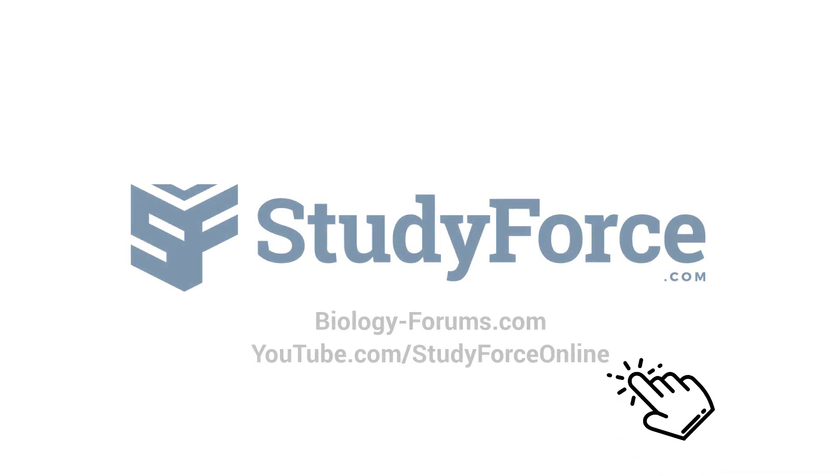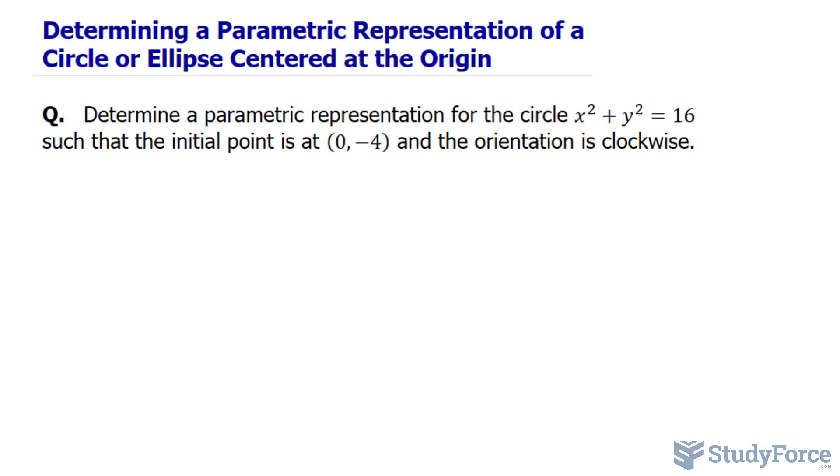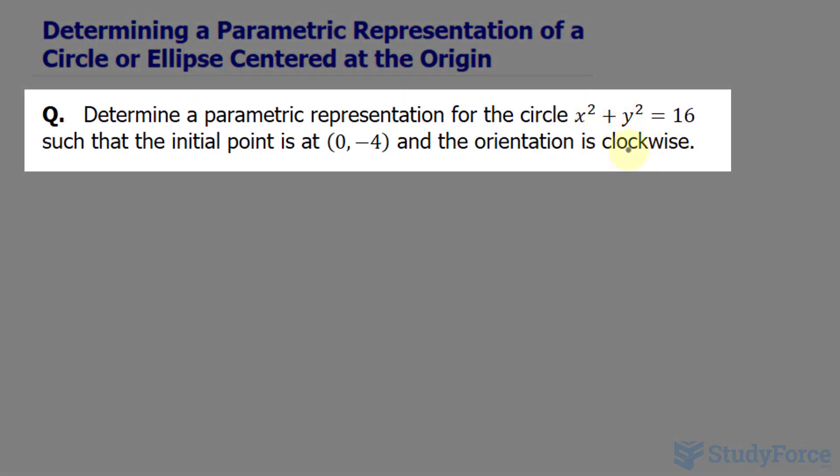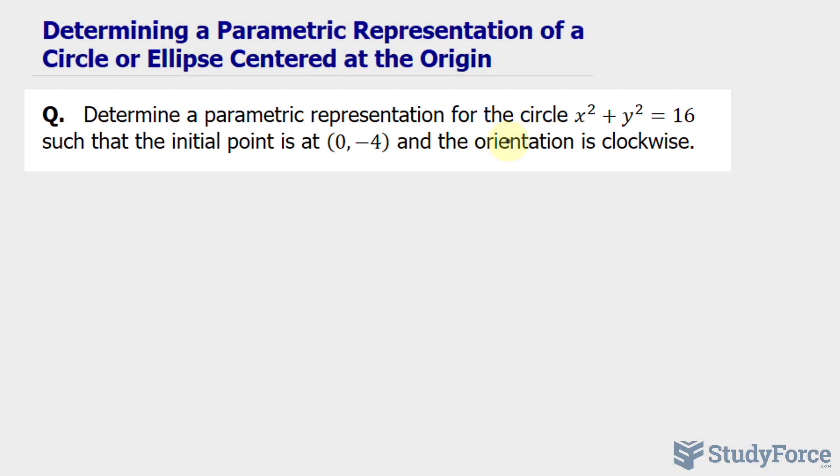In this video, I'll show you how to produce a parametric representation for a circle. In this particular case, we have a formula of a circle that's x squared plus y squared is equal to 16, and we are told that the initial point is at 0 and negative 4, and the orientation is clockwise.